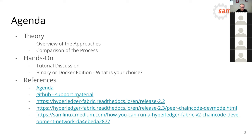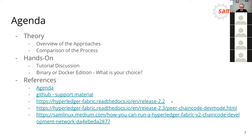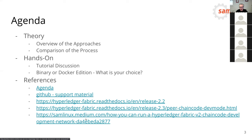Here are some collected links: the GitHub repository with support material has been copied into the chat so you can follow along. There are also two documentation links to the official Hyperledger Fabric 2.2 and 2.3 chaincode dev mode documentation. Interestingly, this tutorial is not yet in the stable 2.2 version — it may come later. There's also a Medium article I wrote about this topic.